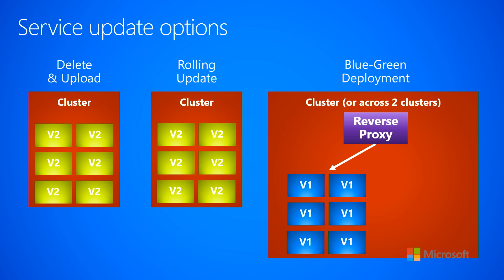Let's turn our attention to the third update option, which is frequently referred to as blue-green deployments. Here I have a single cluster — although this scenario also works across clusters. We have a reverse proxy or load balancer in the cluster directing all traffic to six instances of your service running version one.